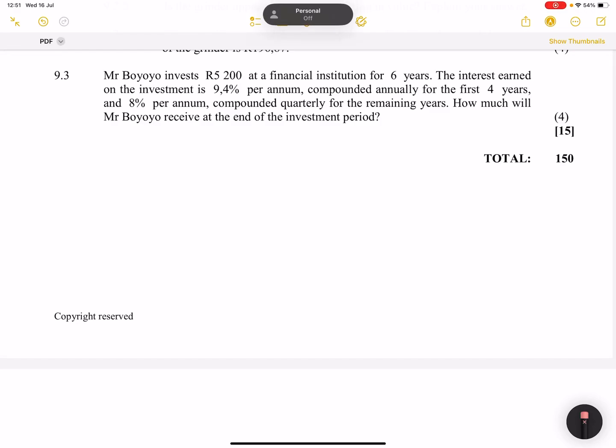All right, and now let's look at investments. Good day, good day, everybody. And once again, we're back together and we're looking at the last question on this question paper. They say to us, we've got Mr. Boyoyo invests 5,200 at a financial institution for six years.